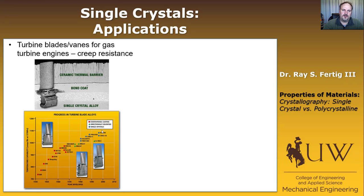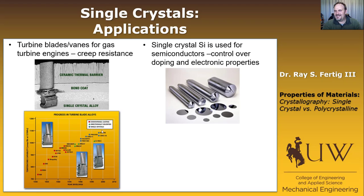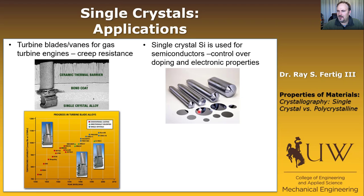Another place you've experienced single crystals is in silicon. The fact that you're watching this video on a computer means you're using silicon single crystals. Single crystal silicon is used for semiconductors and permits very high-quality control over the doping and electronic properties. These are long billets of silicon that are sectioned into disks, then processed using photolithography to create transistors and circuit chips in your electronics.